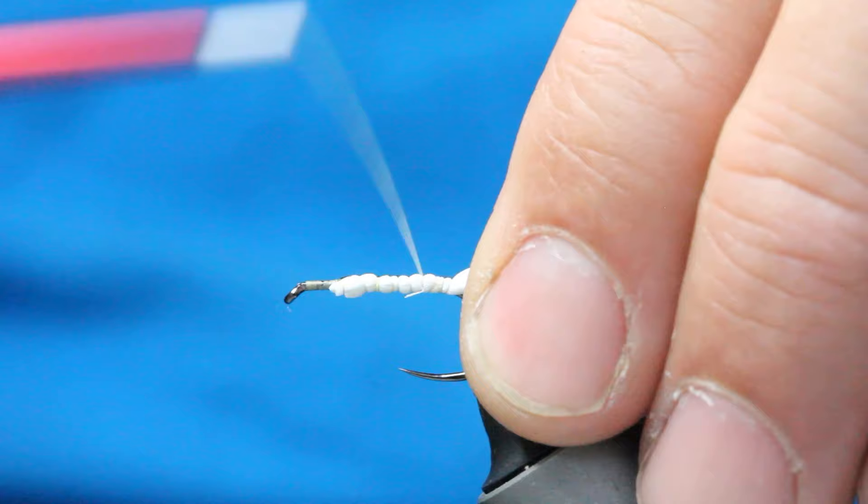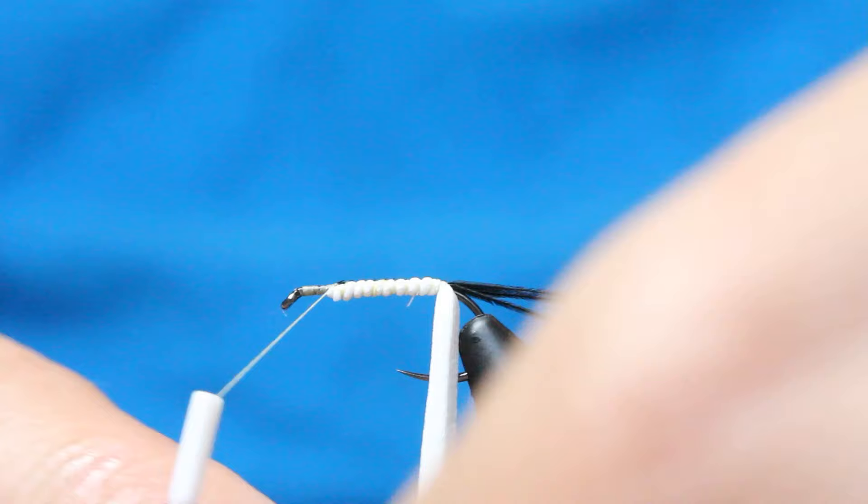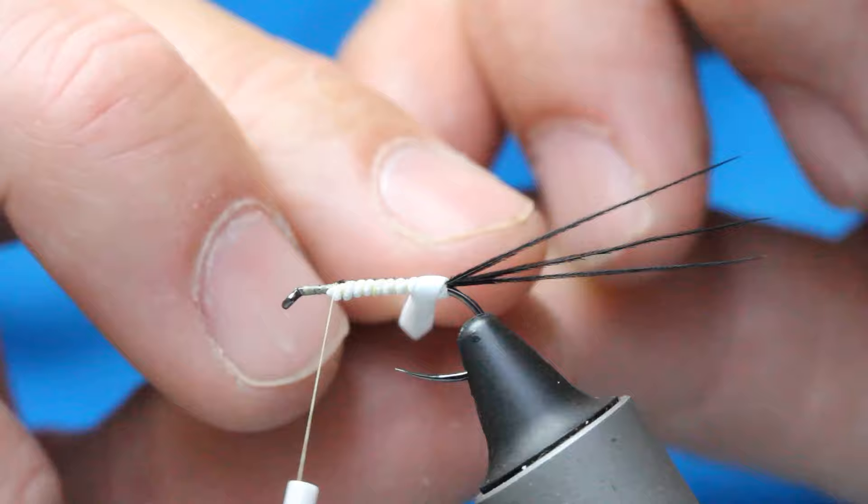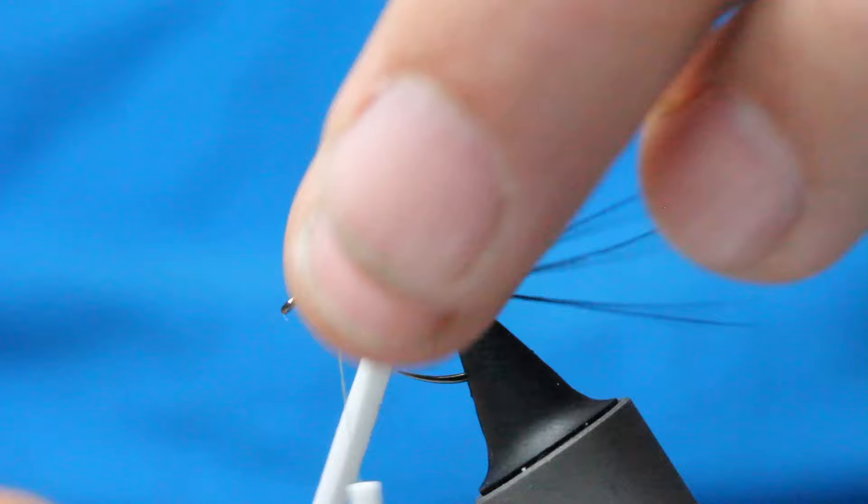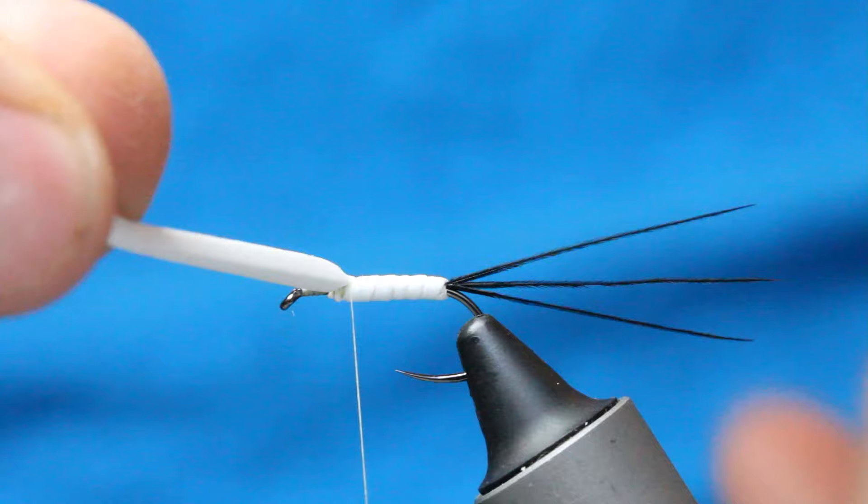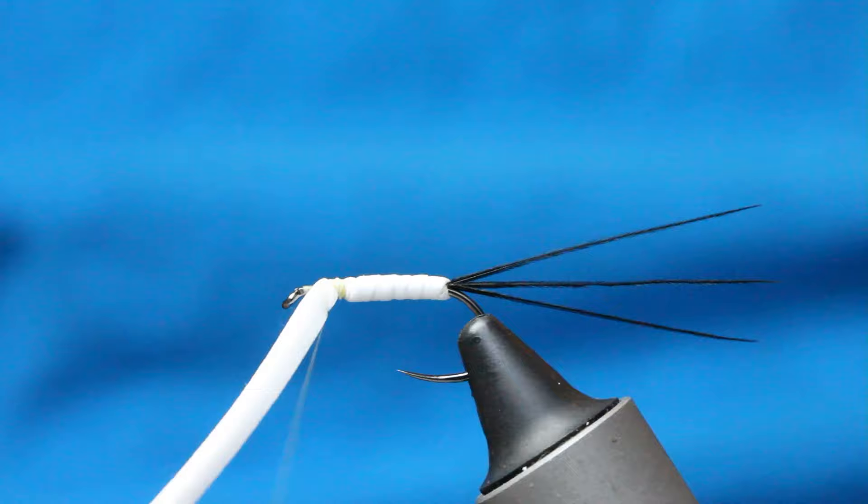That's nice and even across the body, and then we're just coming around and using the foam as a body material. Come around and each wrap overlaps the previous. You'll probably get five, maybe six, just like you would be when you're doing a nymph or something similar. And then with a bit of tension just catch it in. I always do a little bit extra up the body so it doesn't slip, and trim that off.